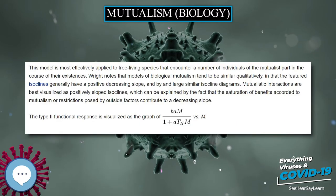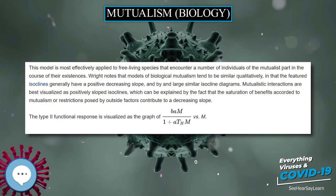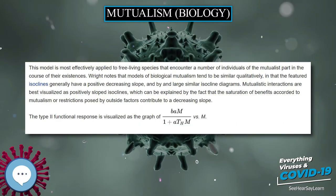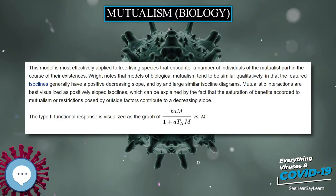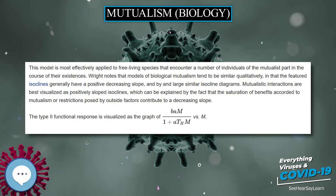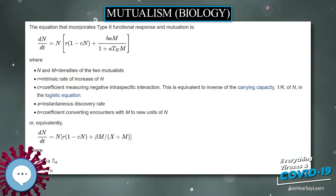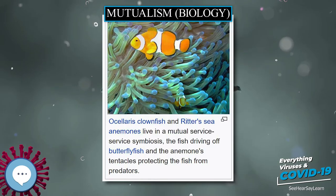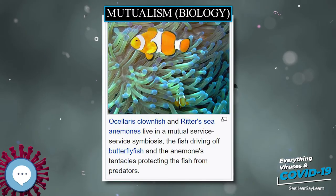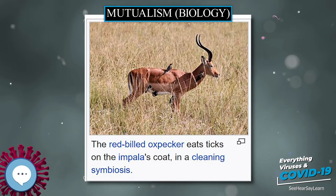However, in common with many mutualisms, there is more than one aspect to it. In the anemone fish-anemone mutualism, waste ammonia from the fish feeds the symbiotic algae that are found in the anemones' tentacles. Therefore, what appears to be a service-service mutualism in fact has a service-resource component.